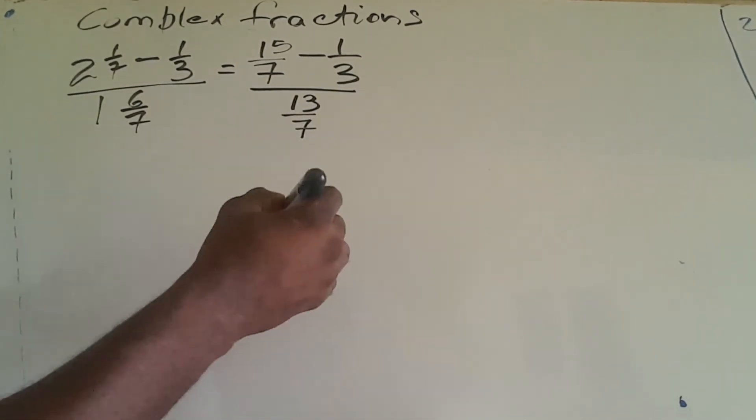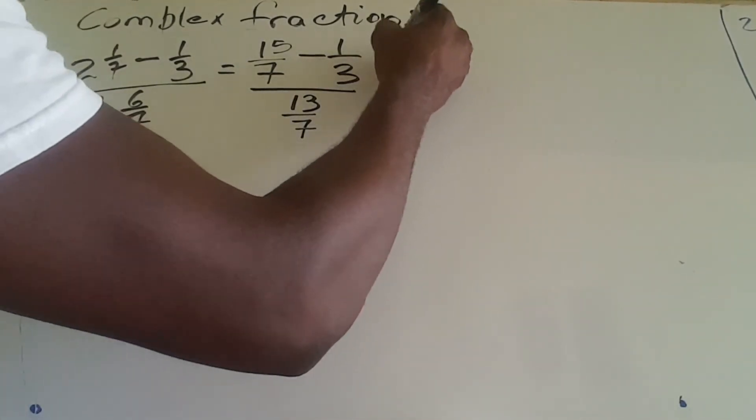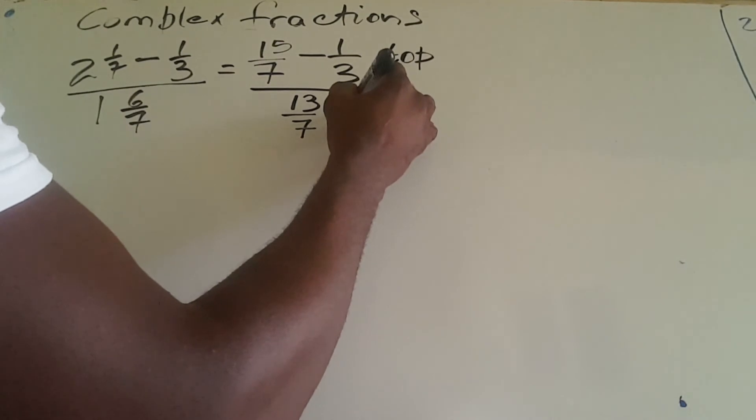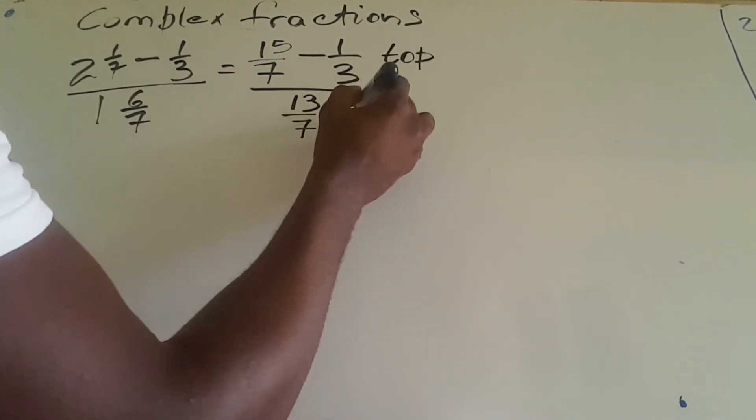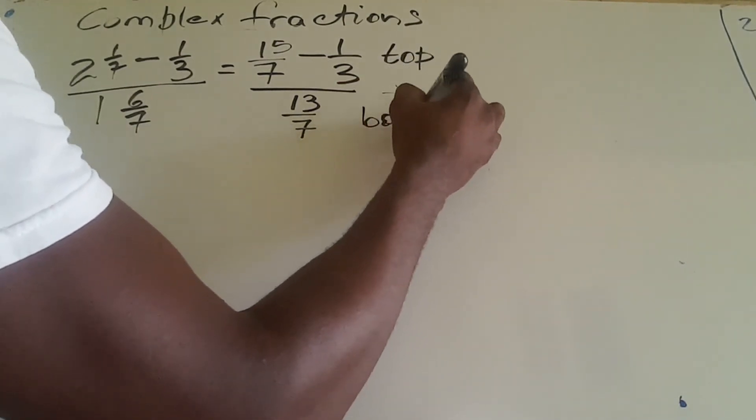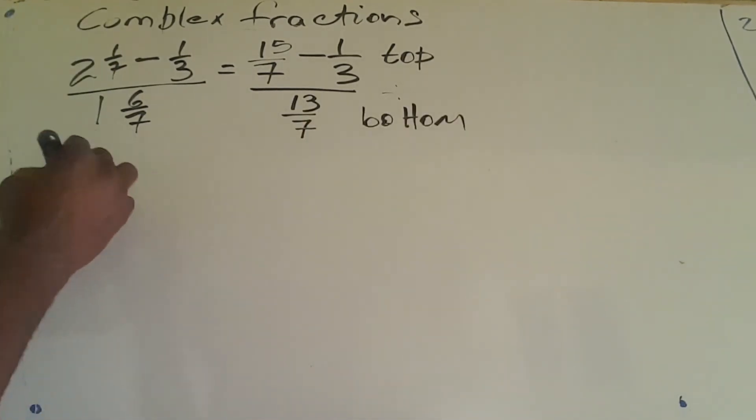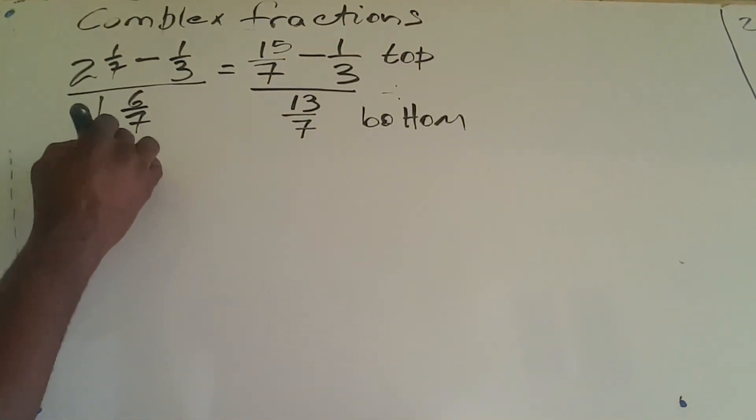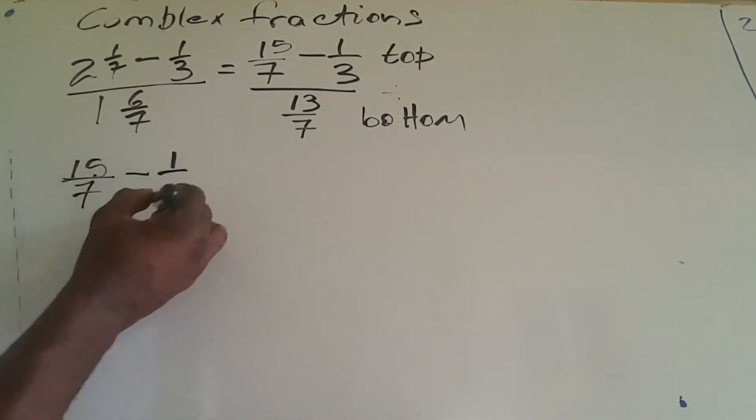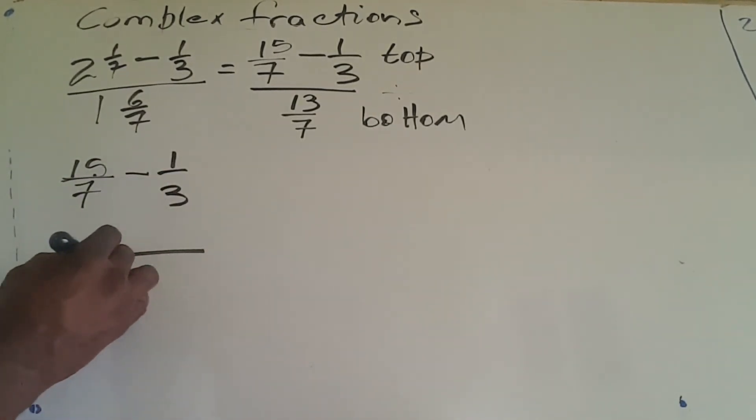We're going to work out the top part, and then it's going to be divided by what we have underneath. Let's deal with the top part first. We're looking at 15/7 minus 1/3. We're going to use an LCM of 21.